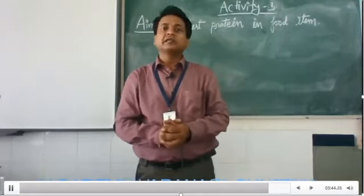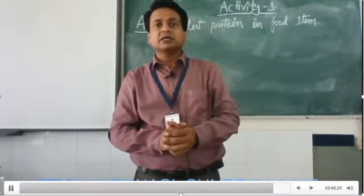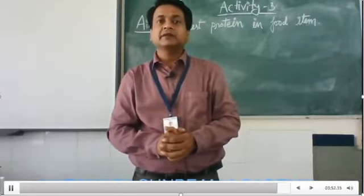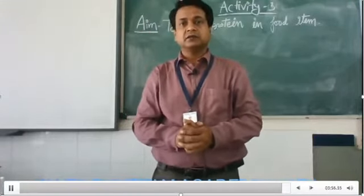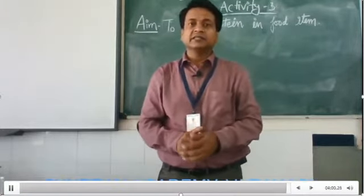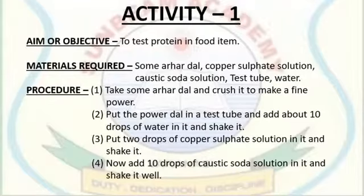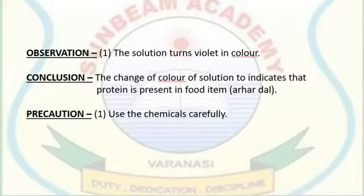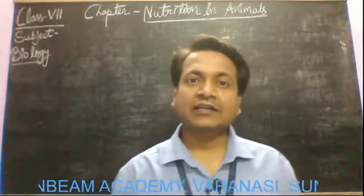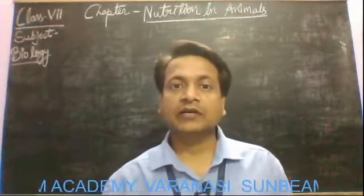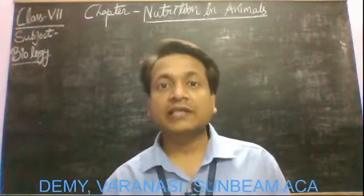This change in color of this solution indicates that protein was present in the food item we took. That food item is arhar dal. So we can say that in arhar dal protein is present — that is why after adding the copper sulphate and then caustic soda the color of that mixture gets changed to dark purple. This activity was performed to demonstrate that protein is present in the food item.